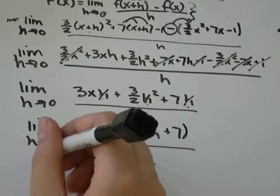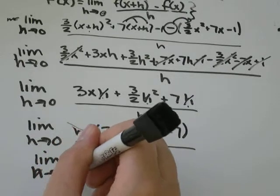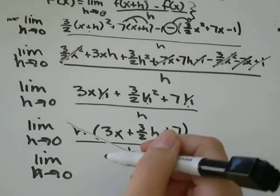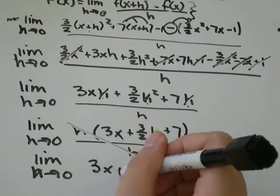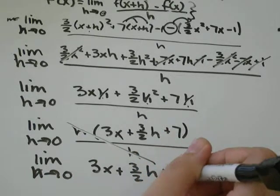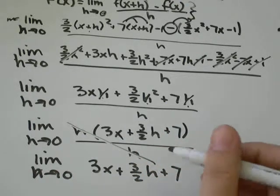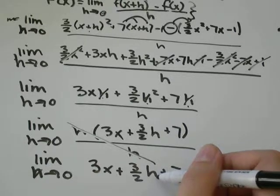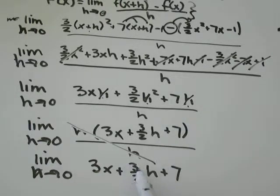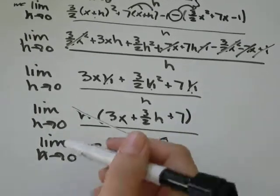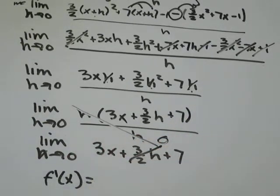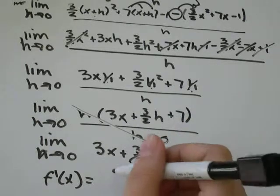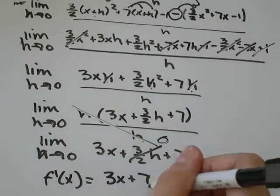And we're left with the limit of h goes to 0 of 3x plus 3 over 2h plus 7. If h is approaching 0, then 3 over 2 times h is approaching 3 over 2 times 0. Anything times 0 is just equal to 0. So we would have figured out after all that work that f prime of x is actually equal to 3x plus 7.